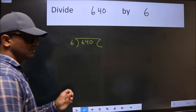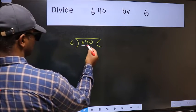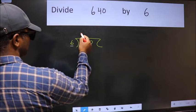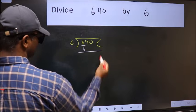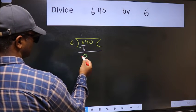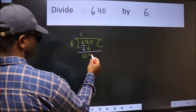This is step one. Here we have 6 and 6. When do we get 6 in the 6 table? 6 ones is 6. Now we subtract and get zero. After this, bring down the next number, so 4 comes down.